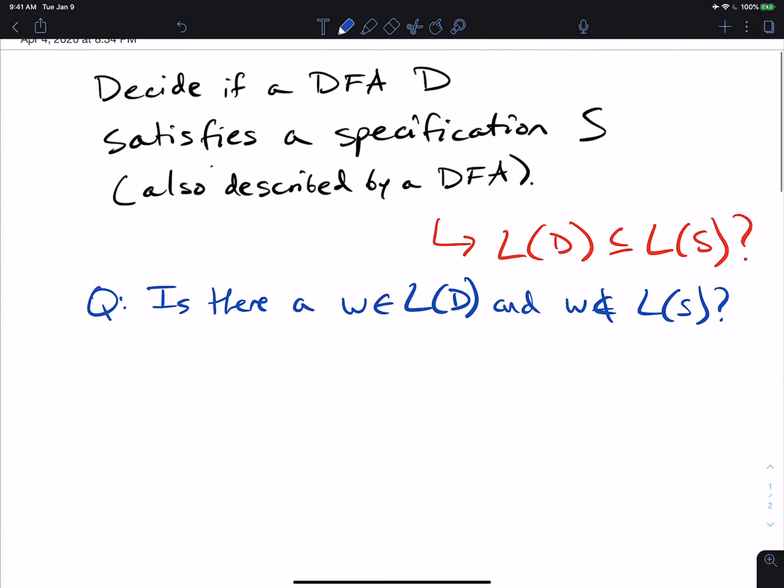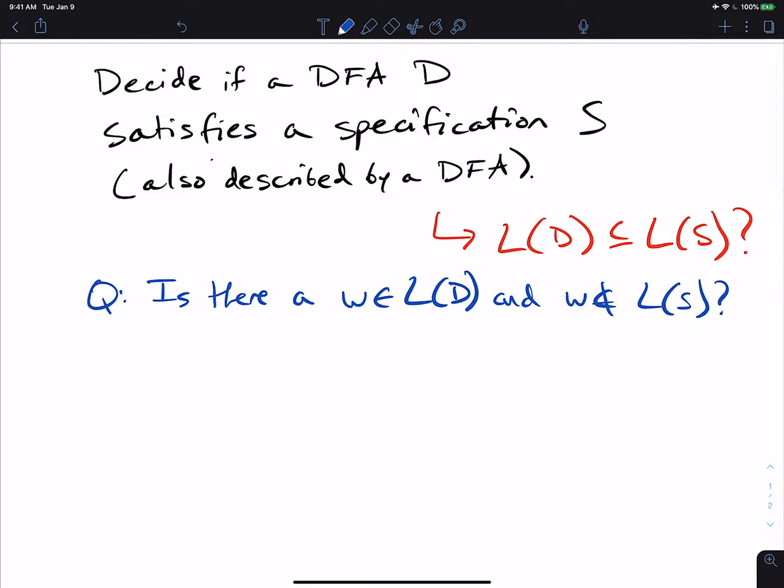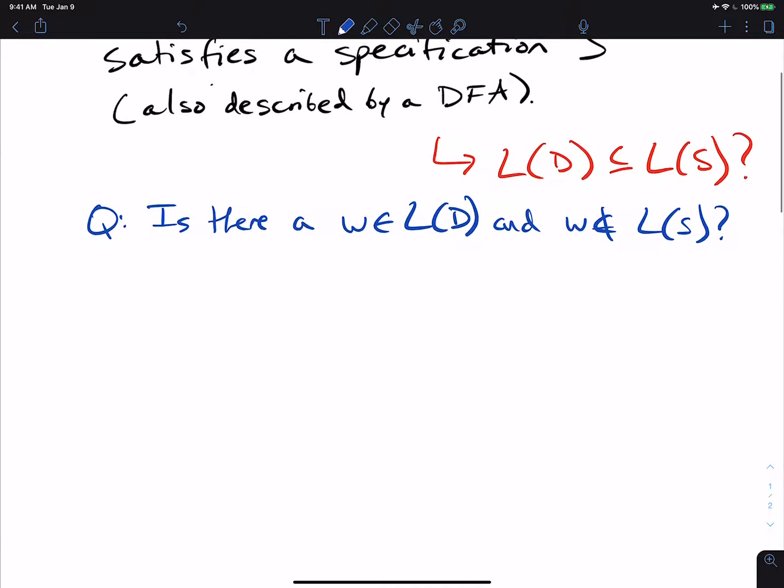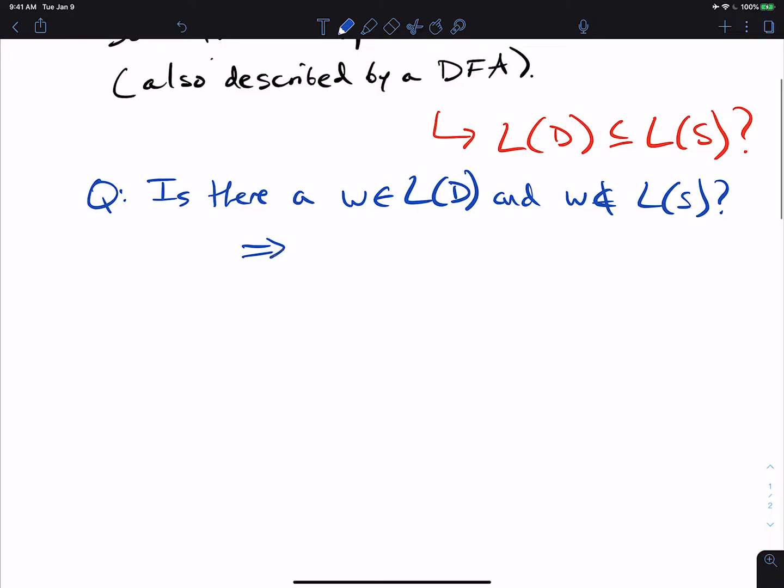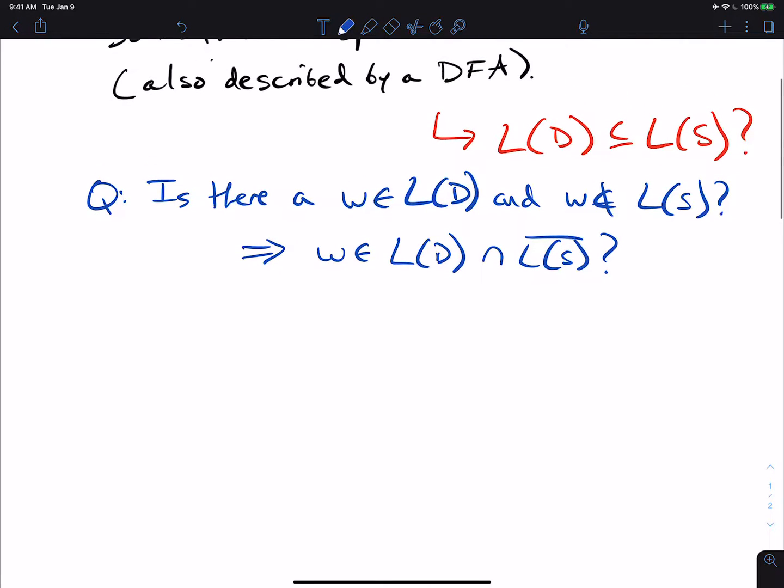If that's true, then the language of D is not a subset of the language of S. So another way of saying this is, is there a W in the language of D intersection with the complement of L of S? Because if there is such a string, then it's in D's language and not in S's language. So that means that it's not a subset here.